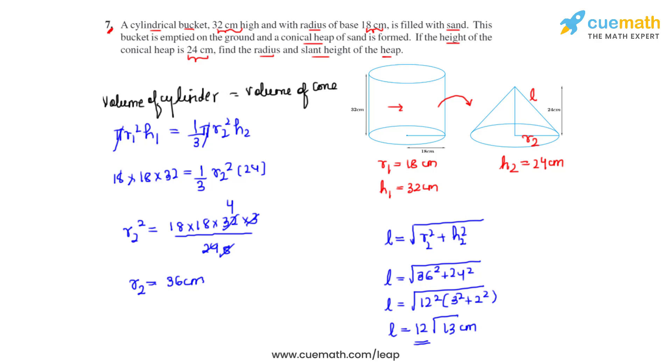And this is how we get the radius and the slant height of the conical heap which was formed by transferring the sand from the cylindrical bucket onto the ground.